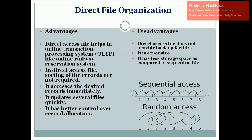The hash function is effective for time utilization — time complexity is O(1), as we have learned. It can update several files quickly, and it has better control over record allocation. These are the beautiful advantages of direct file organization.